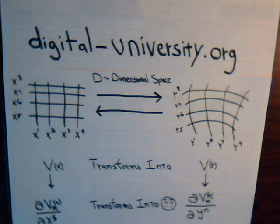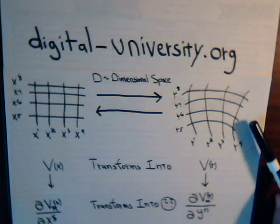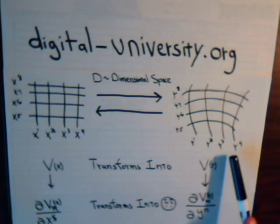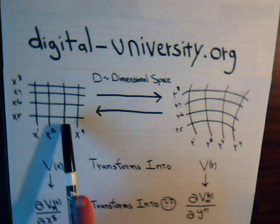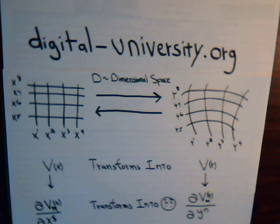Let's say that we have a Cartesian set of axes x1, x2, x3, x4, and so forth. And then there is a curvilinear set of axes y1, y2, y3, y4, and so forth. We know how to transform from the Cartesian to the curvilinear coordinate systems. In the previous videos, we gave a specific example where we transform from Cartesian coordinates to spherical coordinates.